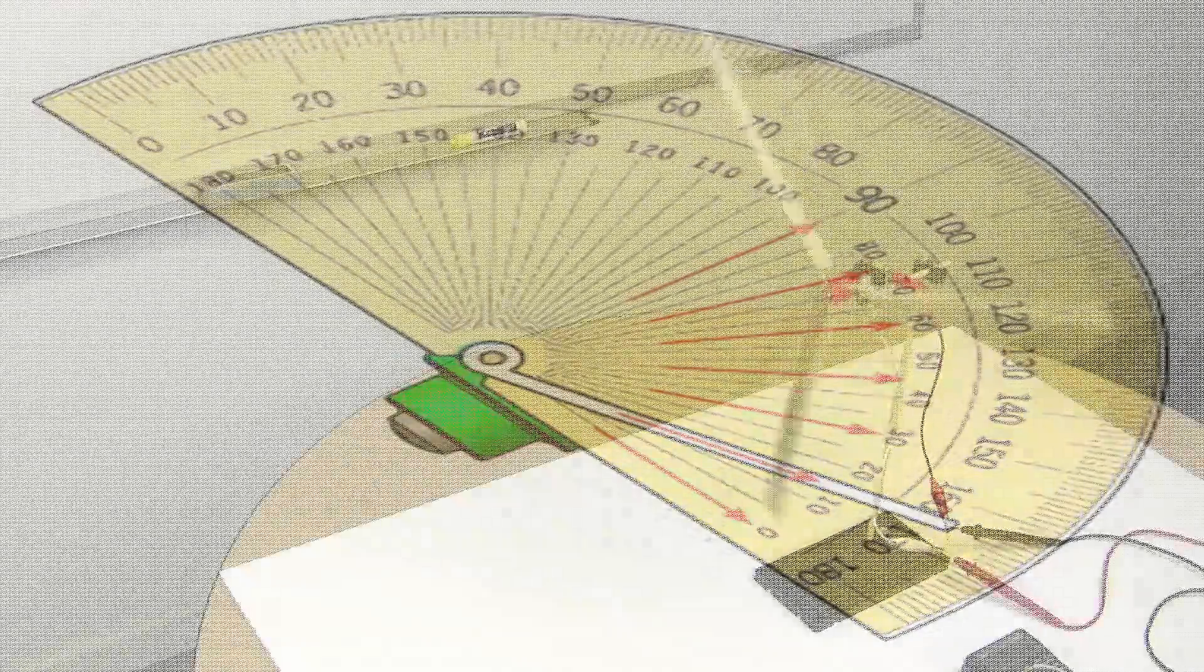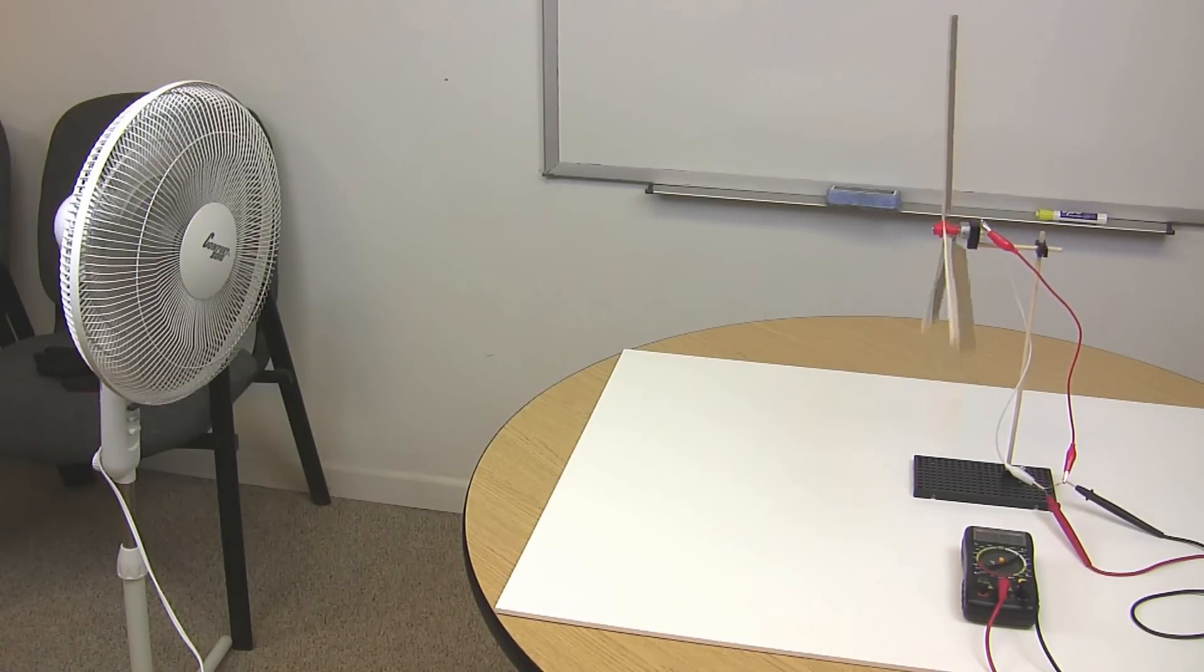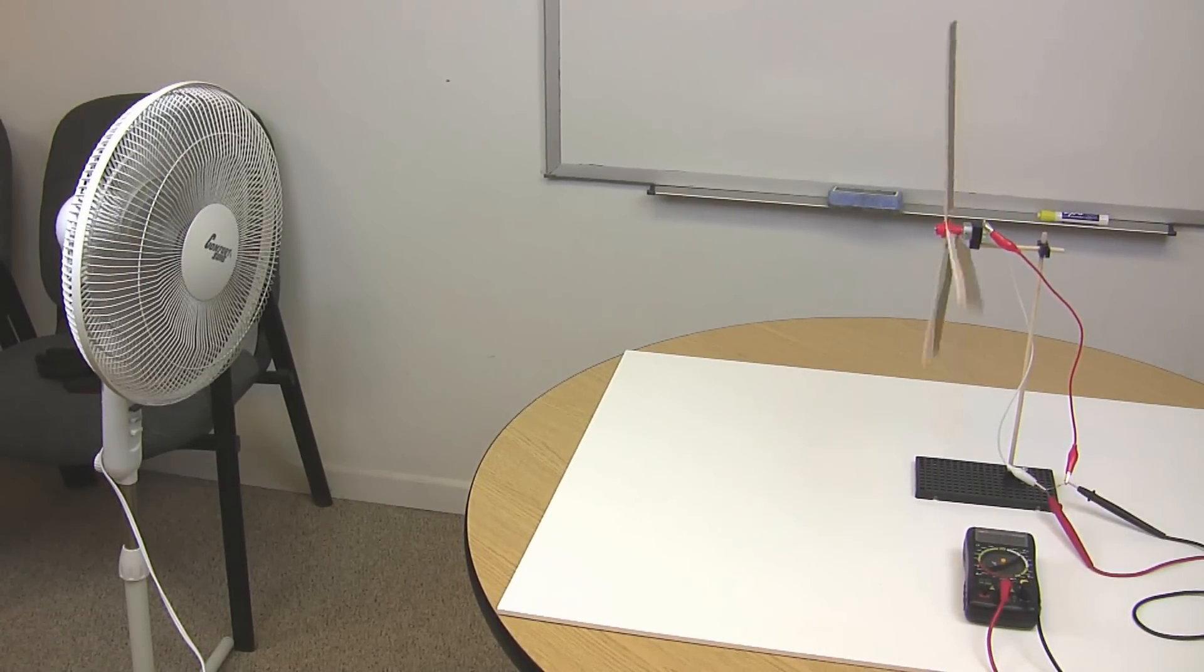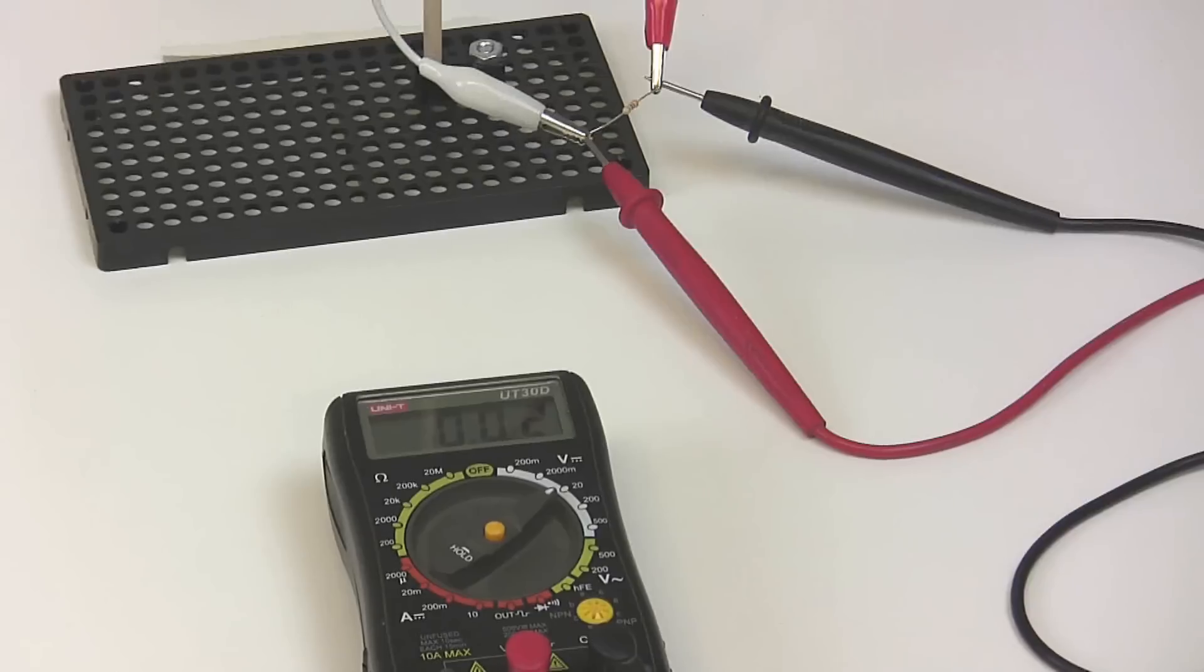Now that your turbine is complete, it's time to test it. Attach it to a multimeter. Set your multimeter to read anywhere between 0 and 2 volts. For your most accurate reading, measure your voltage across the load.